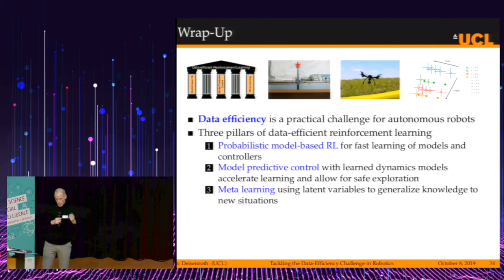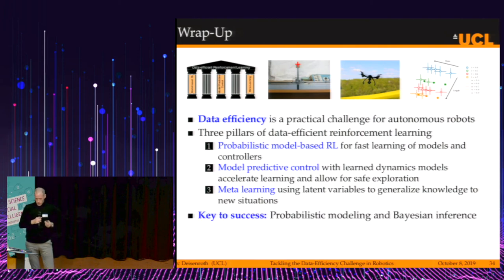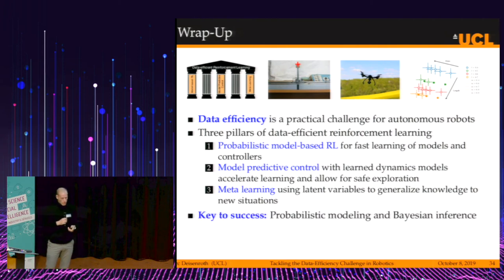To wrap up the entire talk: data efficiency is a practical challenge we need to address in autonomous robots. I talked about three pillars of data-efficient reinforcement learning: probabilistic model-based RL for fast learning of models and controllers; model predictive control with learned dynamics models to accelerate learning and allow for safe exploration; and meta-learning using latent variables to generalize knowledge to new situations. Under the hood, the key to success is probabilistic modeling and Bayesian inference.